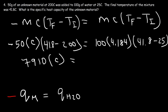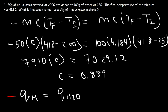On the right: 41.8 minus 25 is 16.8, multiplied by 4.184 times 100, giving 7,029.12. Dividing that by 7,910 gives a value of 0.889 joules per gram per Celsius — the specific heat capacity of the unknown metal, which is probably aluminum.